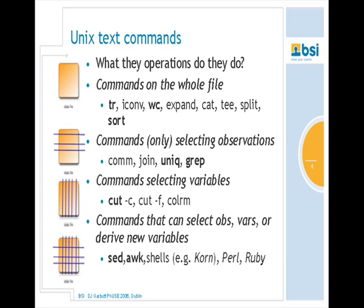Unix text commands — what do they do? If we take our orange square as a data file, we have a whole group of commands that work on the whole file: tr translates characters, iconv covers Unicode characters and machine-dependent data formats, wc counts words, expand changes tabs to spaces, cat copies the program, and split and sort will split a file or give you the file in a different order.